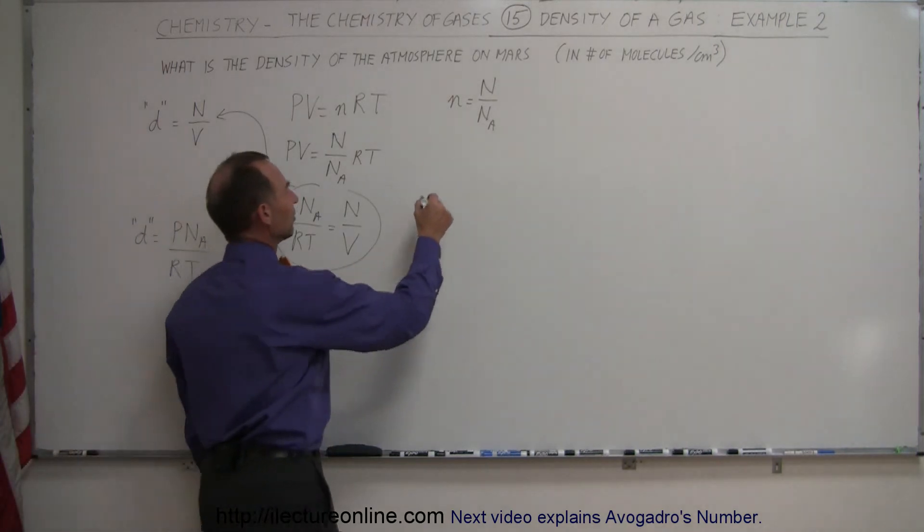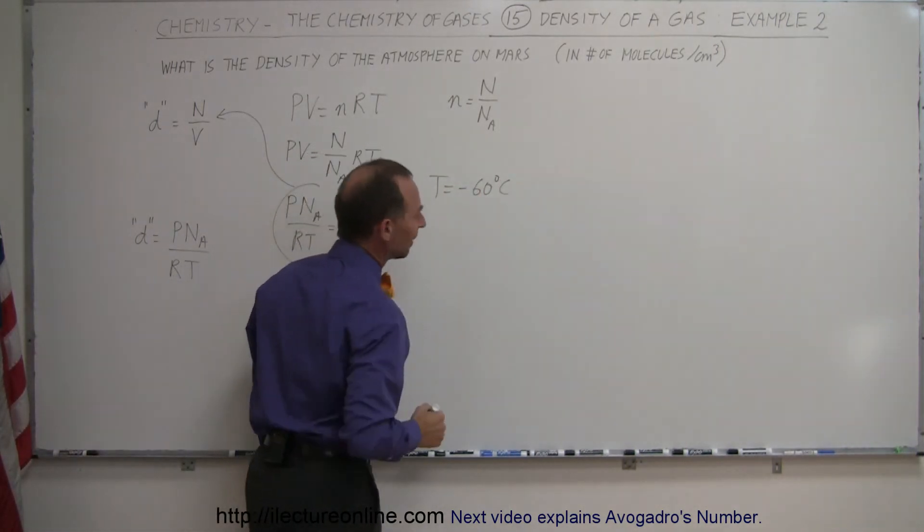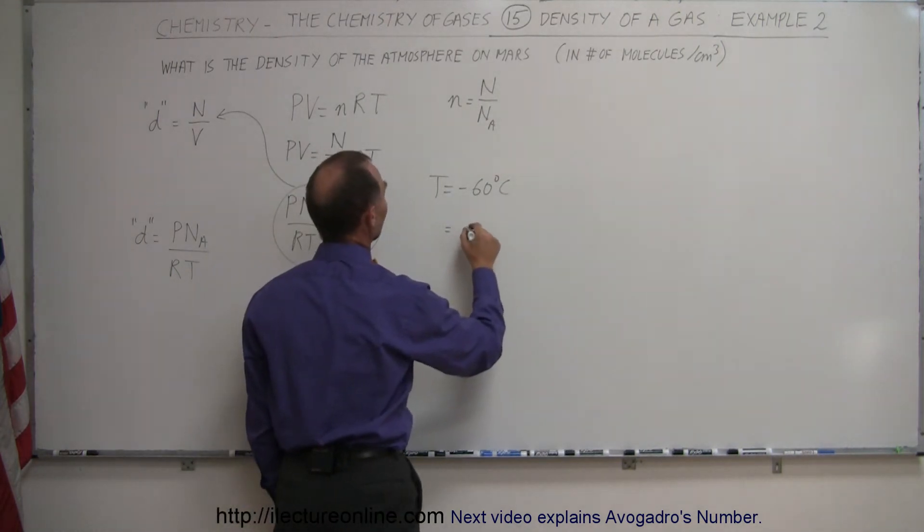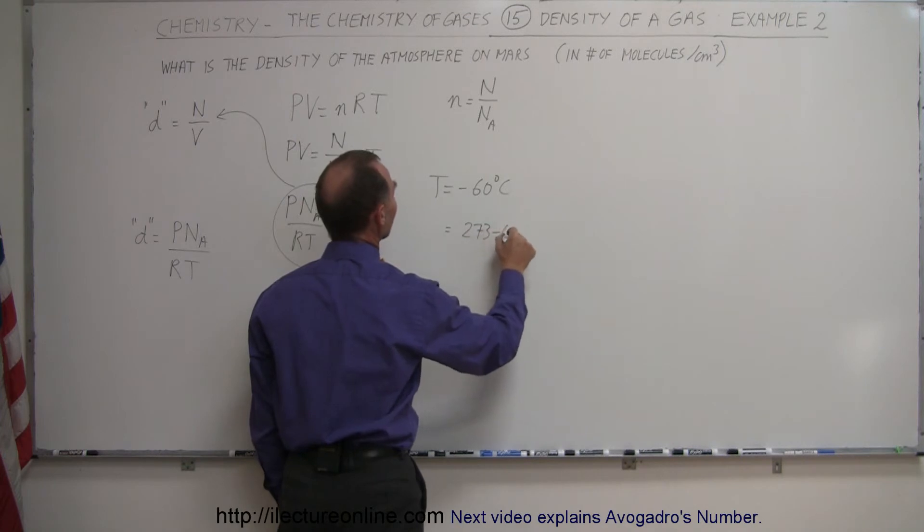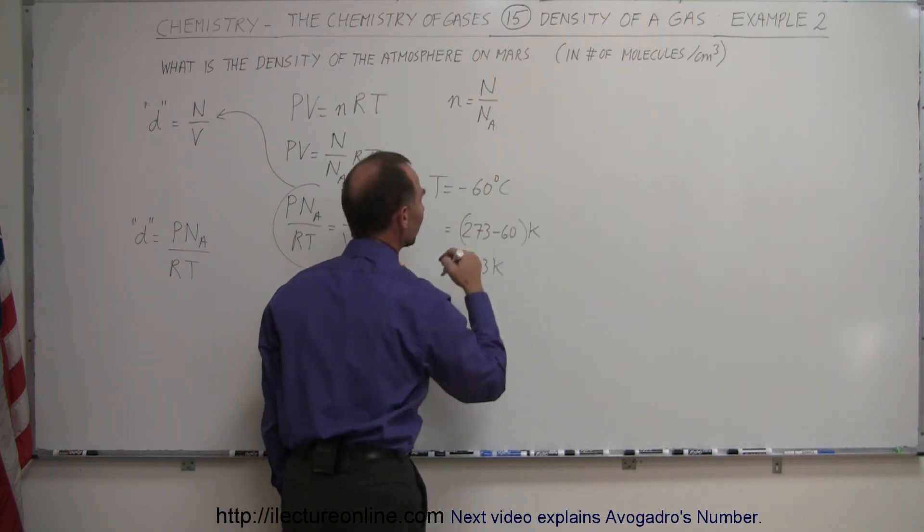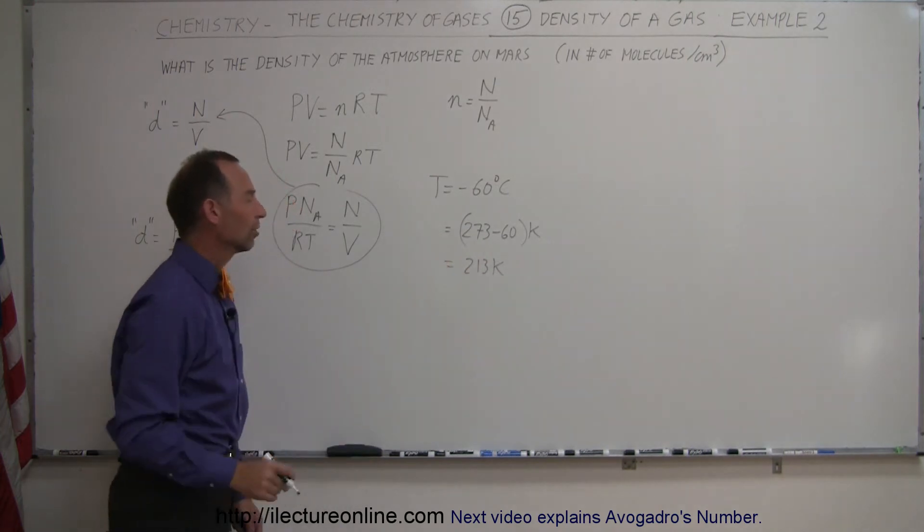Let's say that temperature equals minus 60 degrees centigrade. And of course we want to convert that to Kelvin. That would be 273 minus 60 Kelvin, which equals 213 Kelvin. We simply take the centigrade degrees and add it to 273.